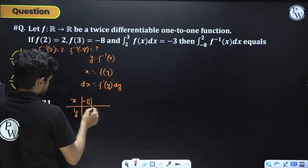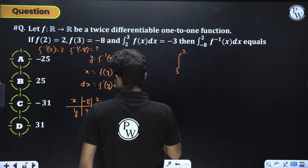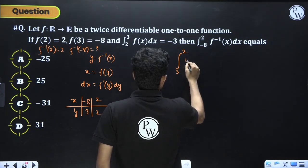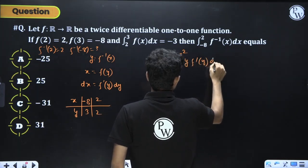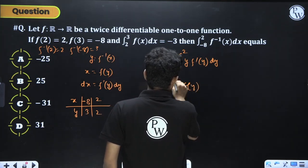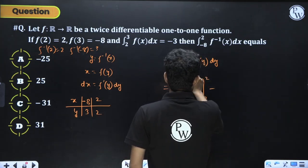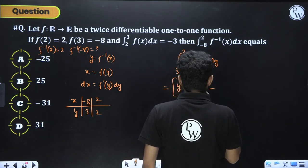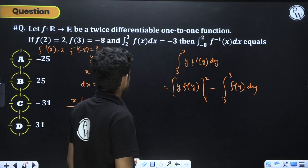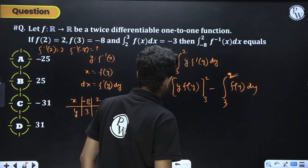The integral becomes ∫(3 to 2) y·f'(y)dy. Integrating by parts: [y·f(y)](3 to 2) - ∫(3 to 2) f(y)dy = [2·f(2) - 3·f(3)] + ∫(2 to 3) f(y)dy = [2·2 - 3·(-8)] + (-3) = [4 + 24] - 3 = 25.